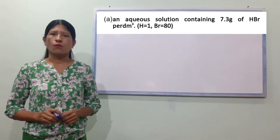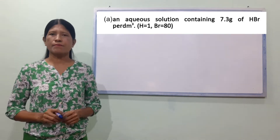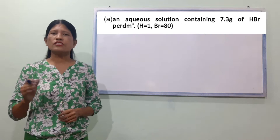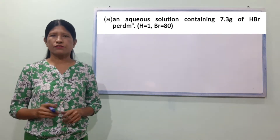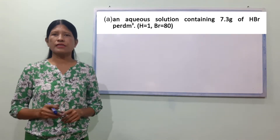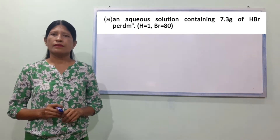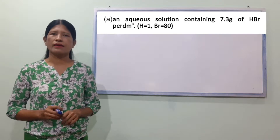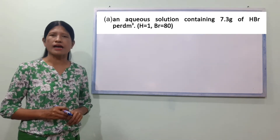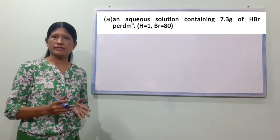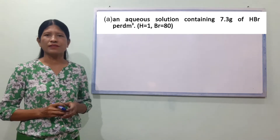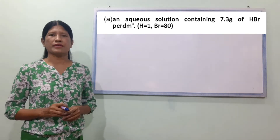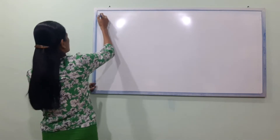This is an aqueous solution containing 7.3 grams of HBr per dm³. One dm³ has 7.3 grams of HBr. The concentration of HBr per dm³ is 1. This is 1.5 grams of HBr per dm³, and 3 grams of HBr per dm³ is 1.